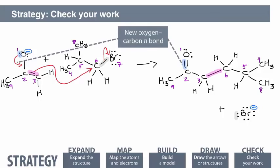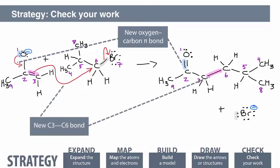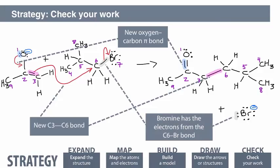We've made the new oxygen-carbon pi bond. The C2-C3 pi bond is gone. We have a new C3-C6 bond. Carbon-6 is still bonded to carbon-5, and carbon-5 is still bonded to the methyl groups 4 and 8. Those methyl groups have not changed because they were not involved in the reaction. And make sure that we still have bromine atom number 7.